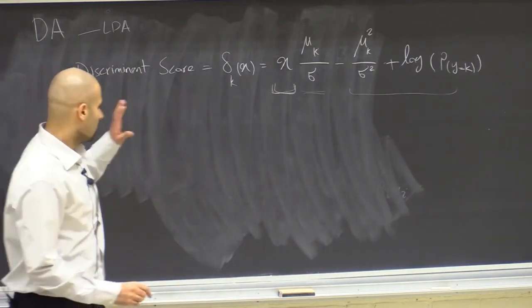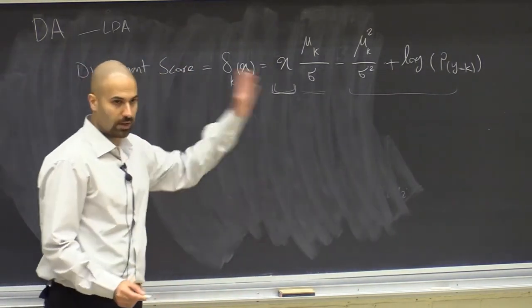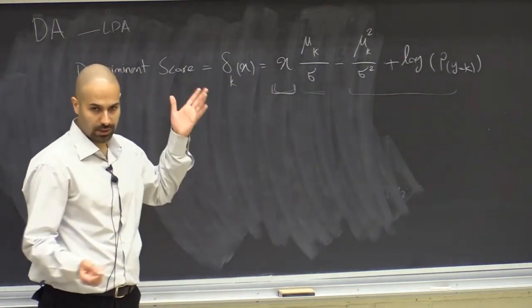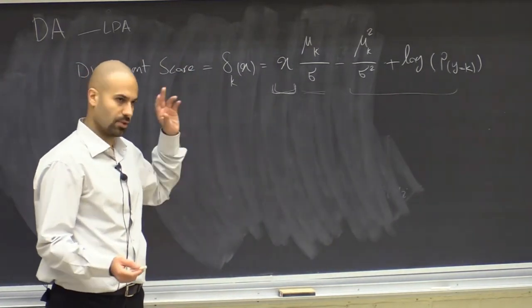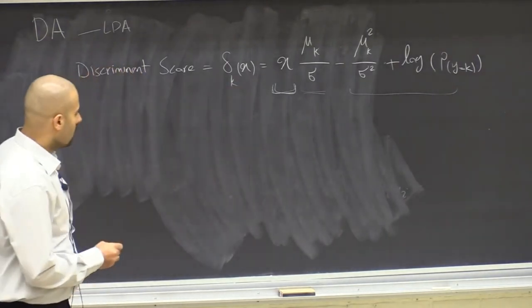In QDA, the discriminant rule is quadratic in x. There will be an x-squared term that doesn't cancel out anymore.